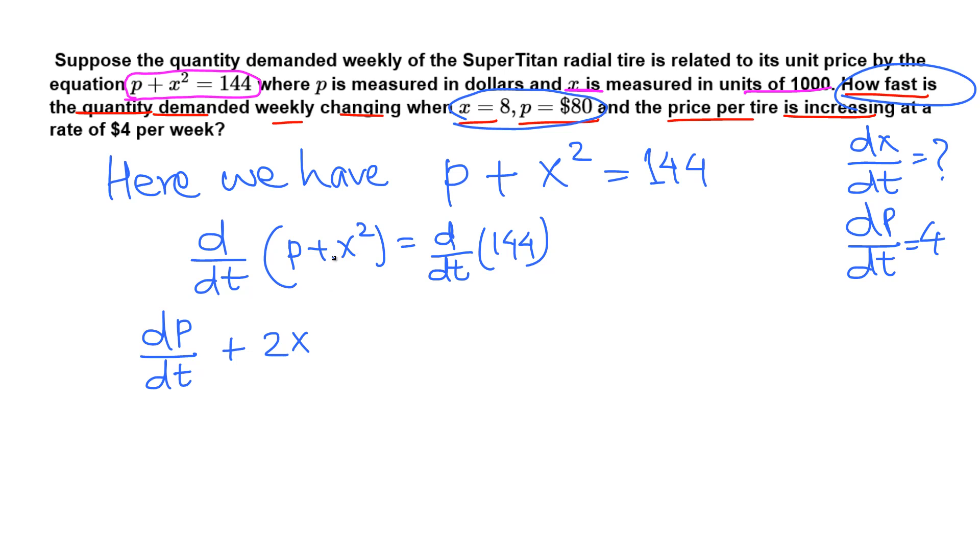Plus a derivative of X squared, that would have been 2x, but we are doing derivative with respect to t, so times X prime from the chain rule, which is dx over dt, equals derivative of 144, that's 0.